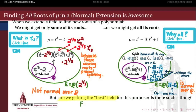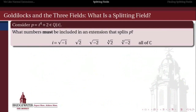But the question is: is this the best way to find a field in which our polynomial splits? Might this polynomial t⁴ - 10t² + 1 split over a smaller field? I think of it like a Goldilocks story — Goldilocks and the three fields. What does it take to split a polynomial?